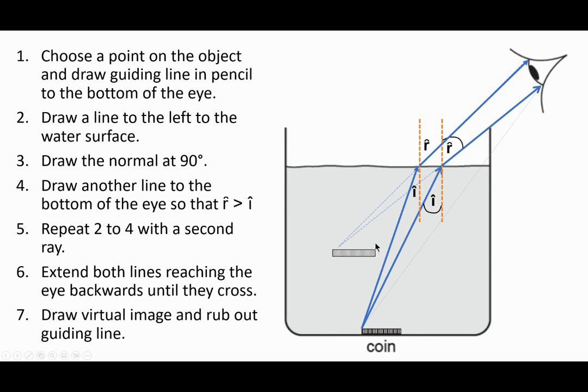We say that the image is virtual because the coin is not actually here—there's no light coming from this imaginary coin. I could wave my hand over here and it wouldn't block anything. I would still be able to see the coin because the light is actually coming from this point.